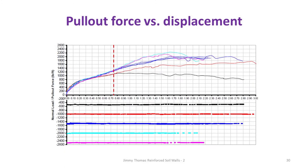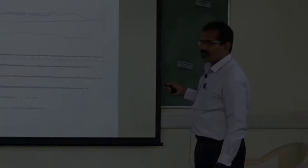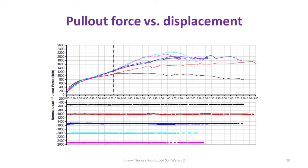This graph shows the horizontal displacement in inches versus the applied pullout force, for different normal forces. As the normal force increases, the pullout force is also maximum — very similar to our direct shear test. If I increase the normal force, I increase the frictional resistance; the same thing happens here.